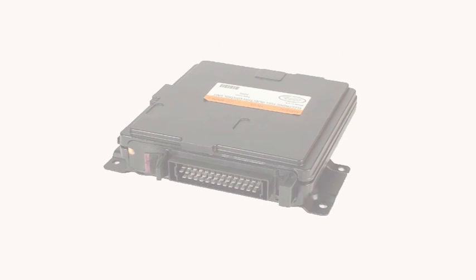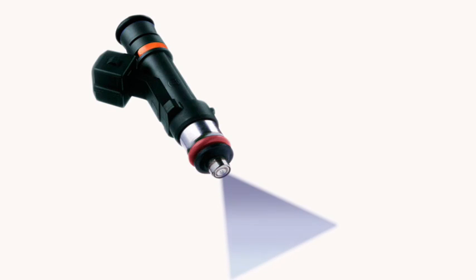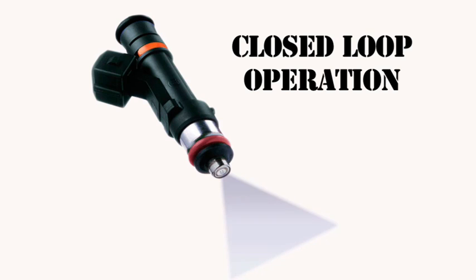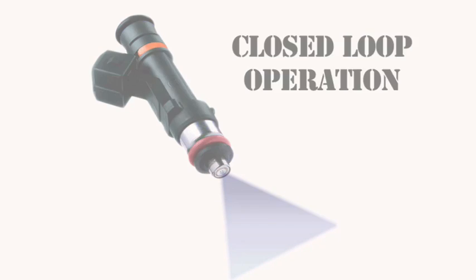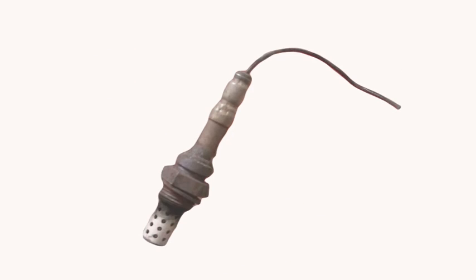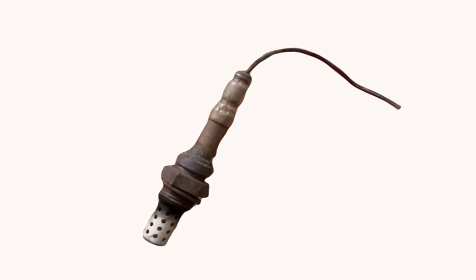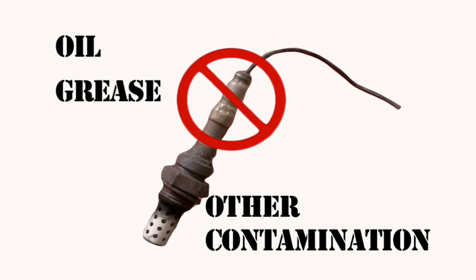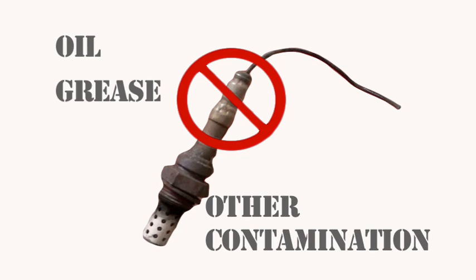The computer adjusts fuel mixture by changing how long the fuel injectors are open, thus adding or subtracting fuel to maintain an optimal mixture. This is referred to as closed loop operation. Because the outside of the sensor is equally important, be careful not to get oil, grease, or other contaminants on the outside of the sensor — it could get ruined.